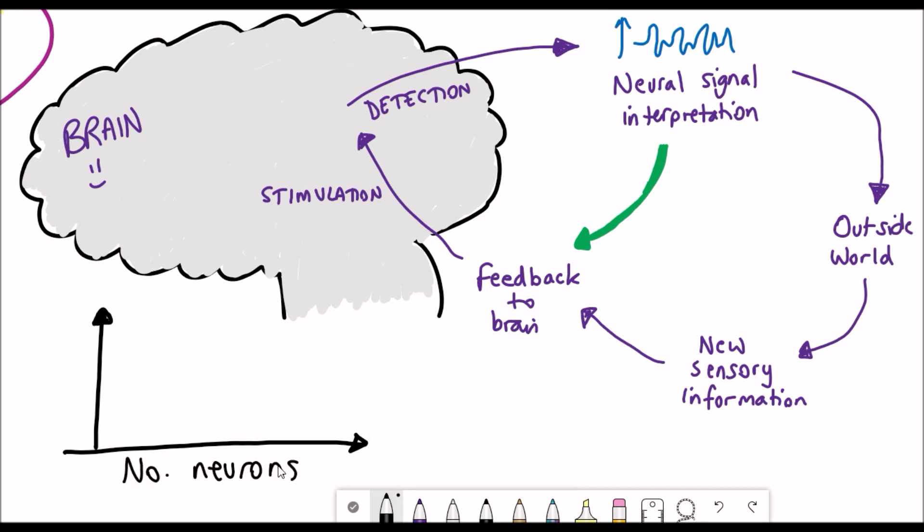Well as many as possible. Studies have shown that the greater the number of neurons that can be recorded the better the predictions are and that helps to alleviate the problem that neuronal signaling is somewhat stochastic so by having more neurons the predictions can be better.